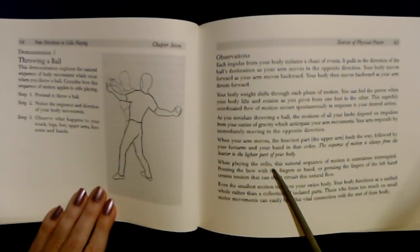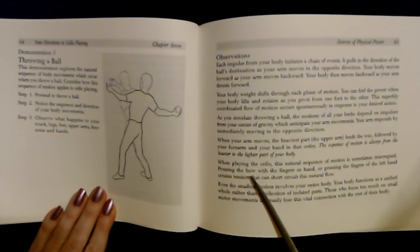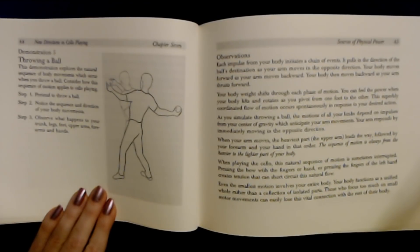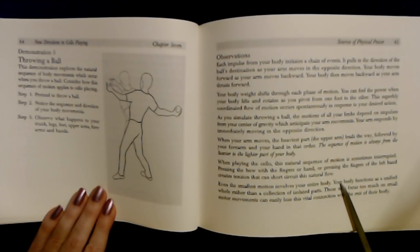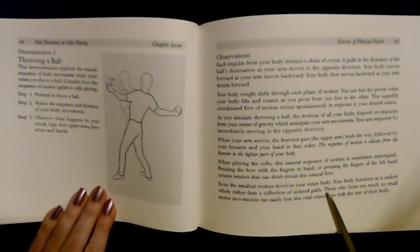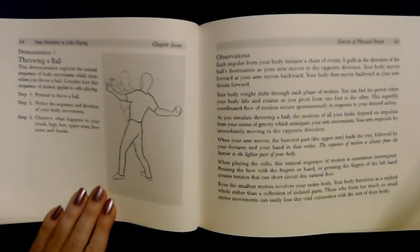When playing the cello, the natural sequence of motion is sometimes interrupted. Pressing the fingerboard with the fingers or hand, or pressing the strings with the left hand creates tension and short circuits natural flow. Even the smallest motion involves your entire body. Your body functions as a unified whole rather than a collection of isolated parts. Those who focus too much on small motor movements can easily lose this vital connection with the rest of the body.